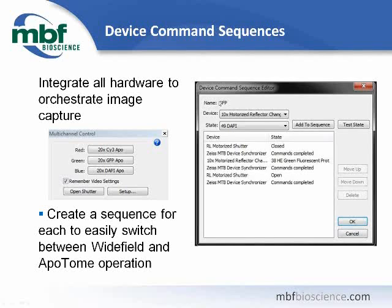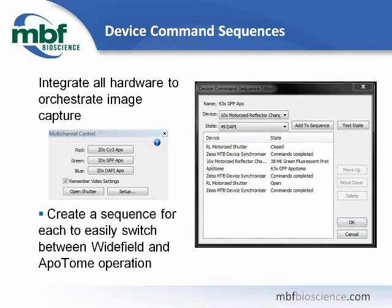A wide field device command sequence for the Zeiss should look like this: we request the motorized shutter be closed, the filter position in the turret is moved to the GFP cube, then we ask for the shutter to open. Synchronizer steps ensure communication between the microscope and software has completed prior to moving on — especially important at the last step to ensure all commands are done before the camera acquires its image. For an Apatome device command sequence, only one thing changes: we include the Apatome device and select the objective-filter calibration we set up in the Apatome setup dialog.